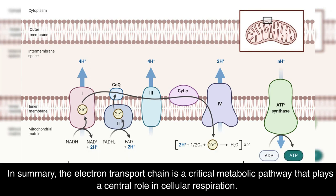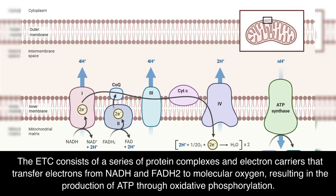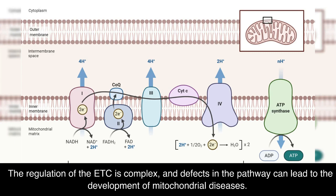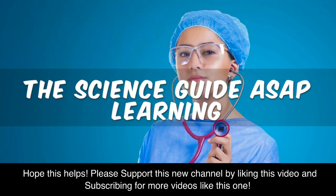In summary, the electron transport chain is a critical metabolic pathway that plays a central role in cellular respiration. The transfer of electrons through the pathway results in the generation of a proton gradient across the inner mitochondrial membrane, which is then used to power ATP synthase and the synthesis of ATP. The ETC consists of a series of protein complexes and electron carriers that transfer electrons from NADH and FADH2 to molecular oxygen, resulting in the production of ATP through oxidative phosphorylation. The regulation of the ETC is complex, and defects in the pathway can lead to the development of mitochondrial diseases. Understanding the steps and regulation of the ETC is essential for a comprehensive understanding of cellular metabolism and the treatment of metabolic disorders. Hope this helps! Please support this new channel by liking this video and subscribing for more videos like this one.